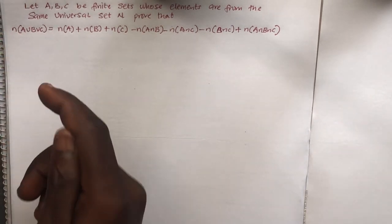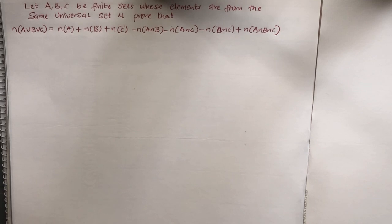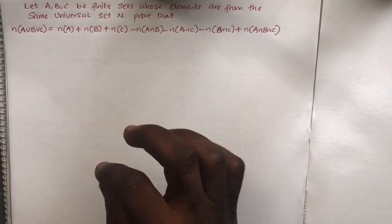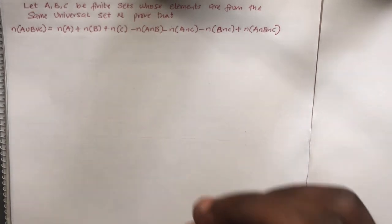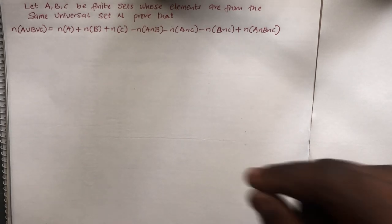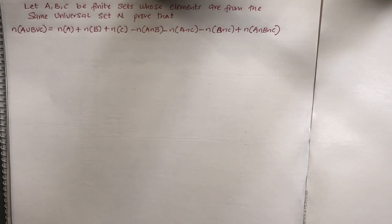Look at this. We have: let A, B, and C be finite sets whose elements are from the same universal set N. Prove that the cardinality of A∪B∪C equals the cardinality of A plus cardinality of B plus cardinality of C minus cardinality of A∩B minus cardinality of A∩C minus cardinality of B∩C plus cardinality of A∩B∩C.